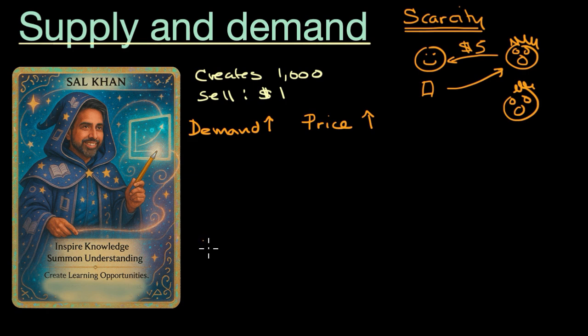Well, let's say that now the card manufacturer says, wow, they're selling for five dollars. We should start printing these again. And so they print another, let me write this down, they print another 10,000 cards. So one way to think about it is supply of the cards just went up. What do you think is going to happen?